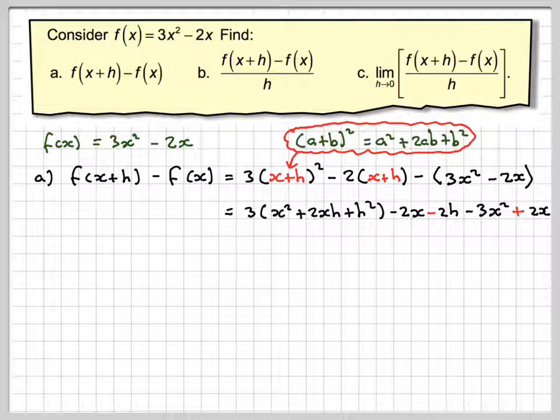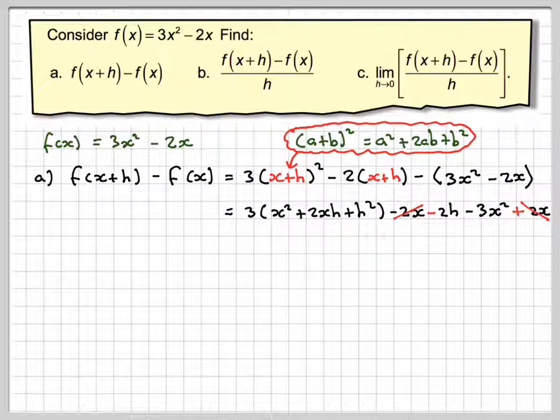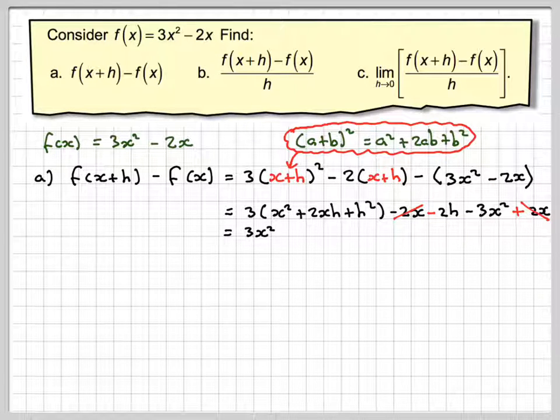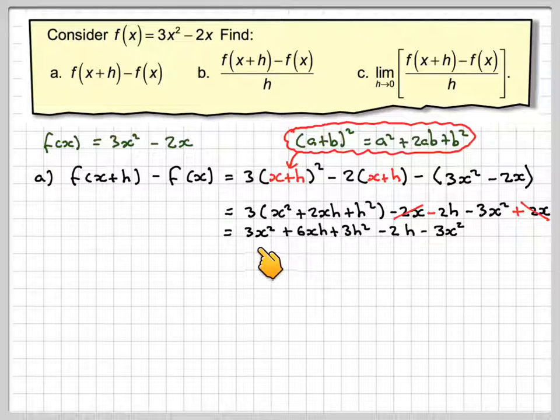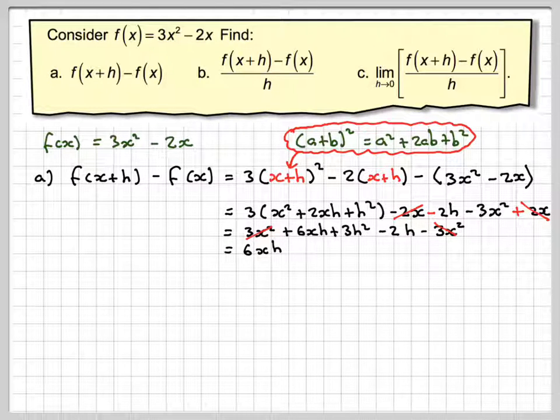The -2x and 2x cancel out. Taking 3 through the bracket, we get 3x² + 6xh + 3h² - 2h - 3x². The 3x² terms cancel out, giving us 6xh + 3h² - 2h as the final answer.